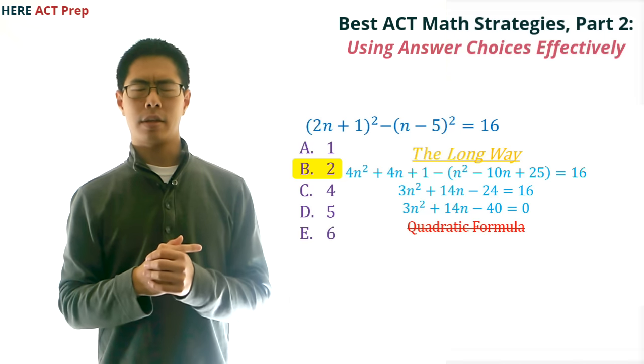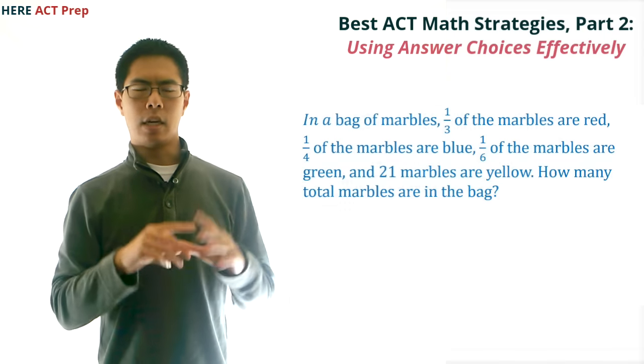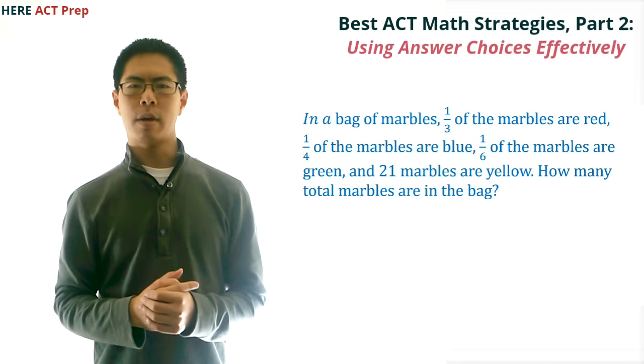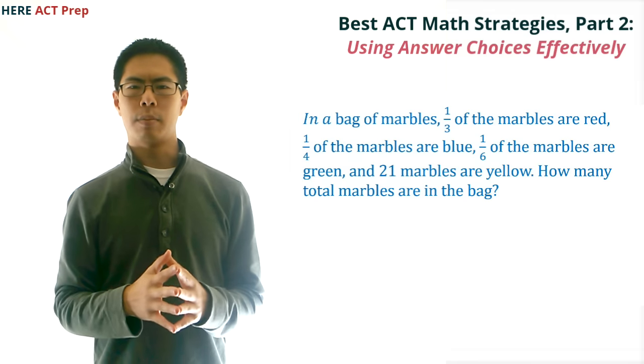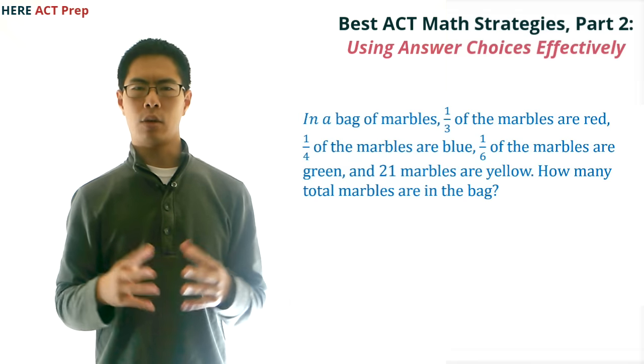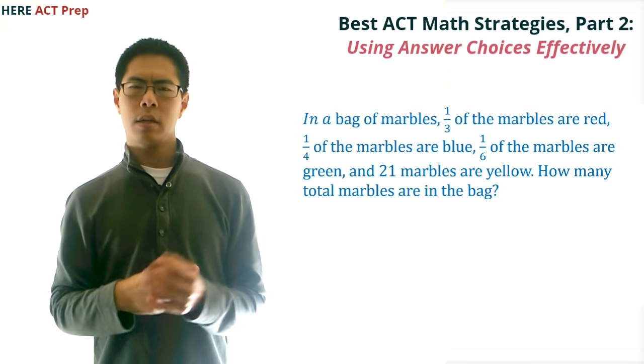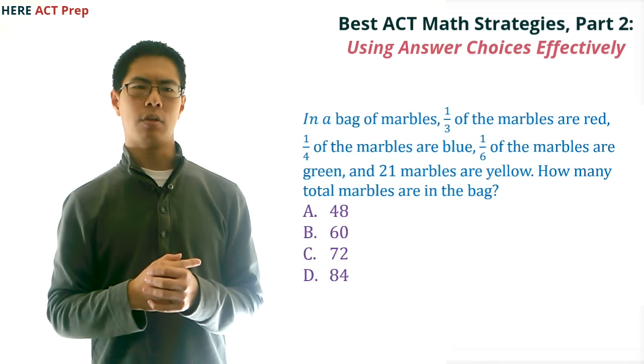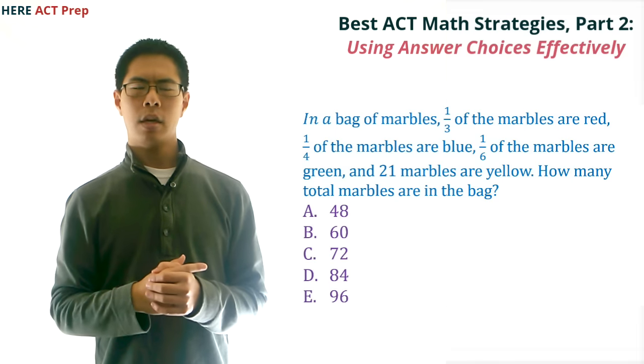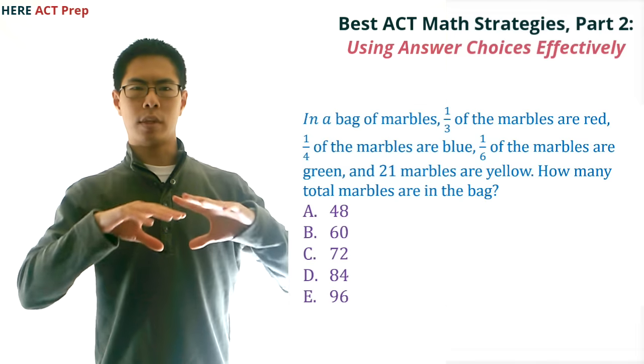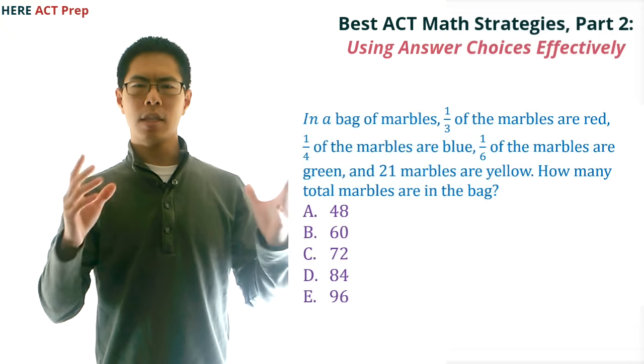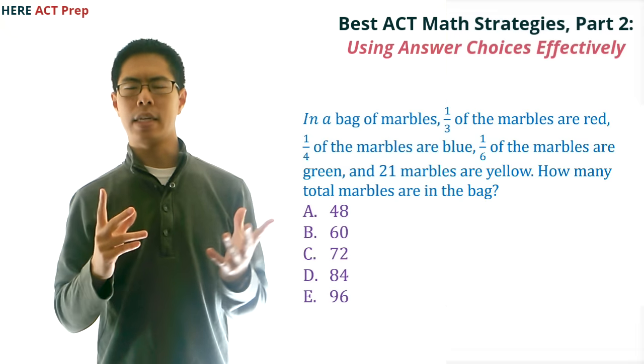Now, let's try one more example together. Let's take a look at this question. In a bag of marbles, one-third of the marbles are red, one-fourth of the marbles are blue, one-sixth of the marbles are green, and 21 marbles are yellow. How many total marbles are in the bag? Our choices are 48, 60, 72, 84, and 96. Like with the last question, we can figure out pretty quickly that this question will take a while to set up and solve, and that using the answer choices will probably be quicker and easier.